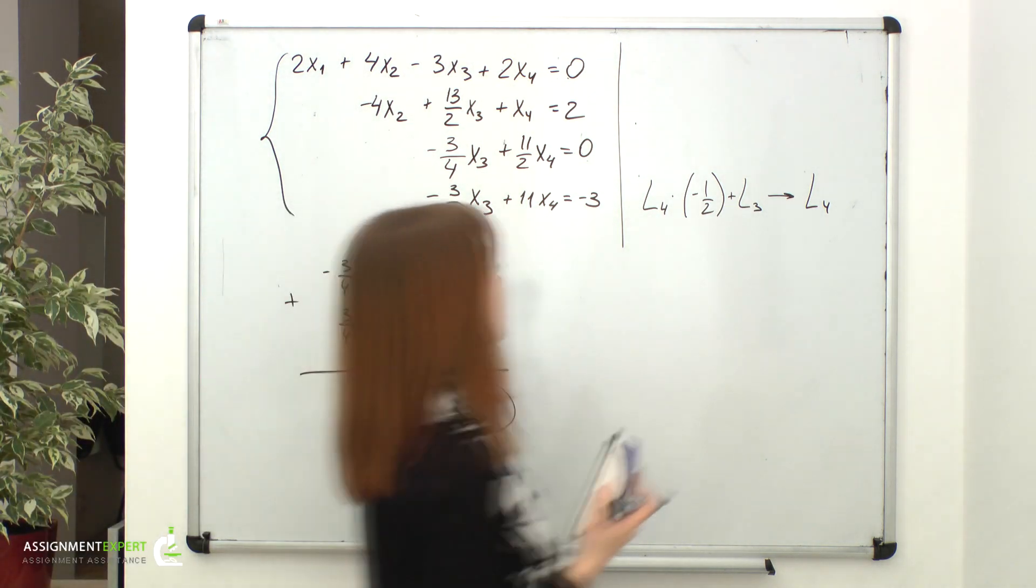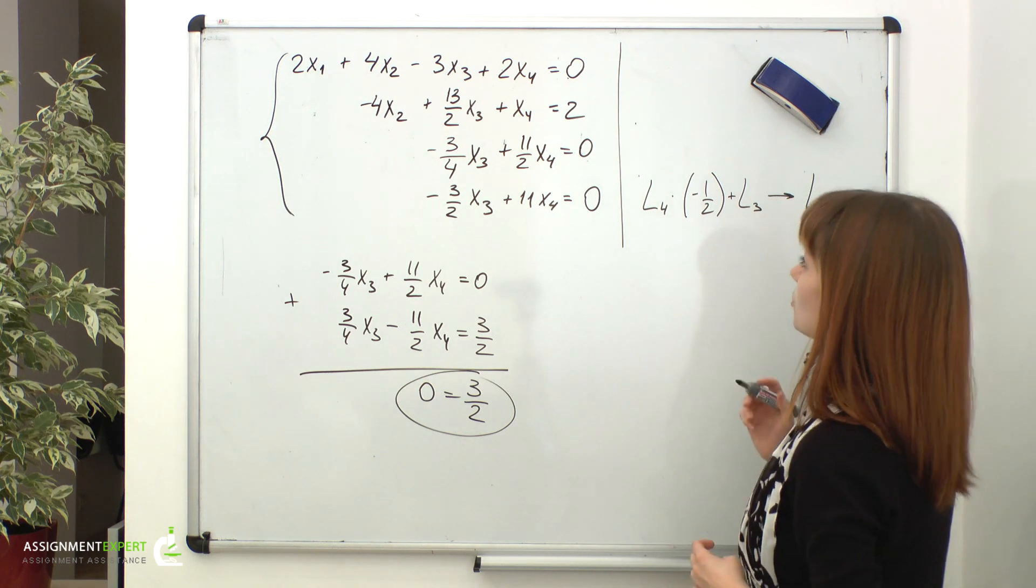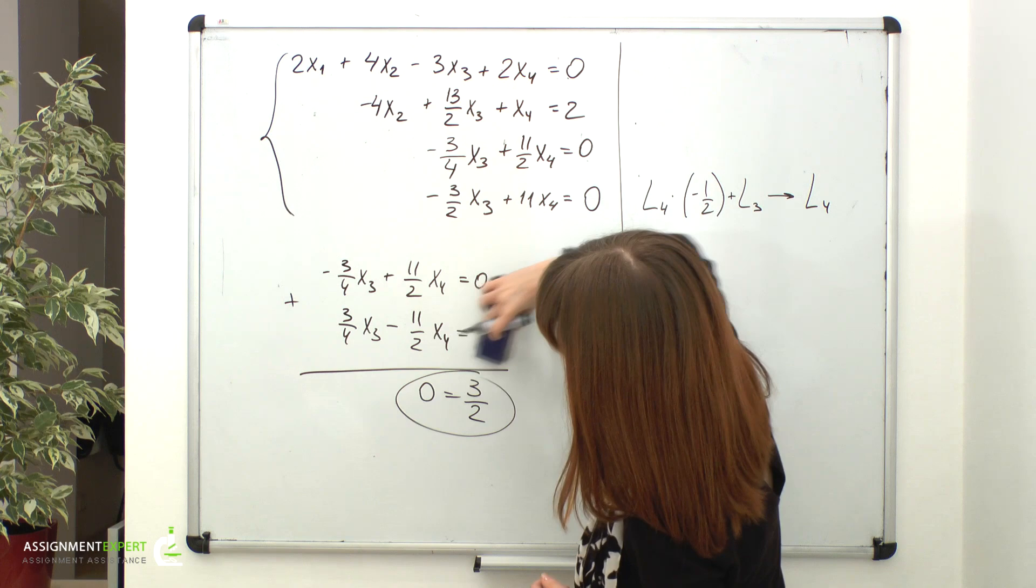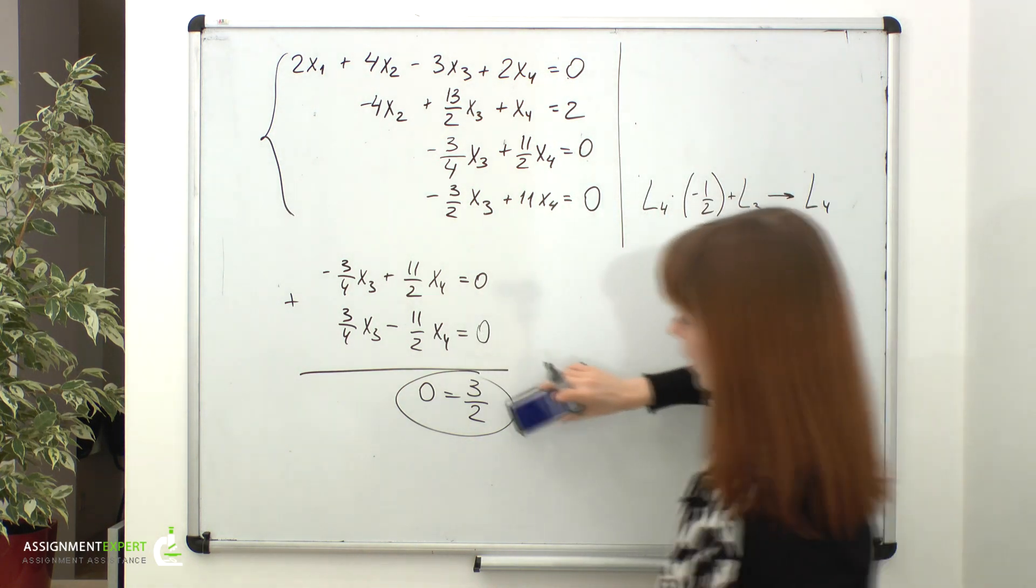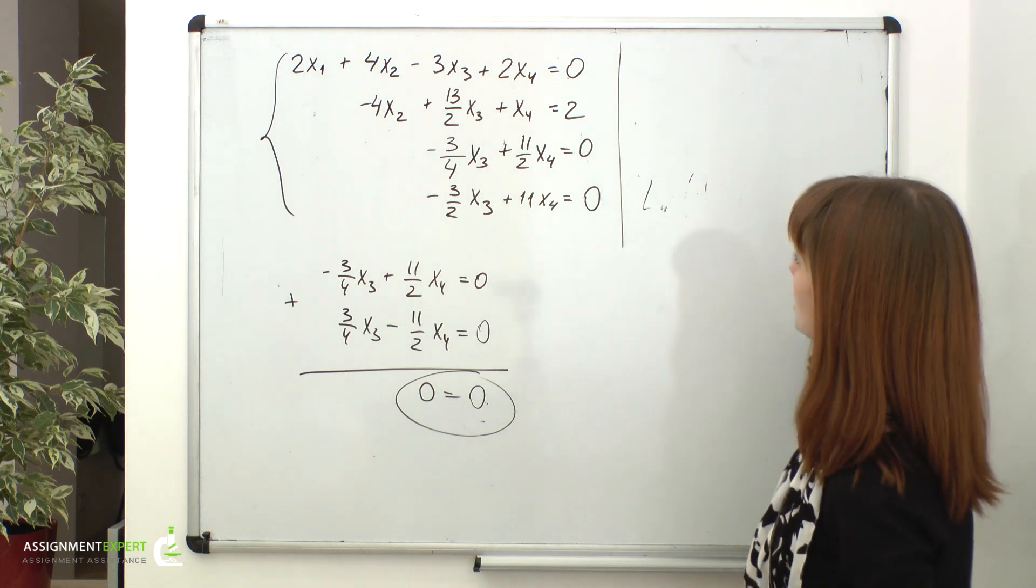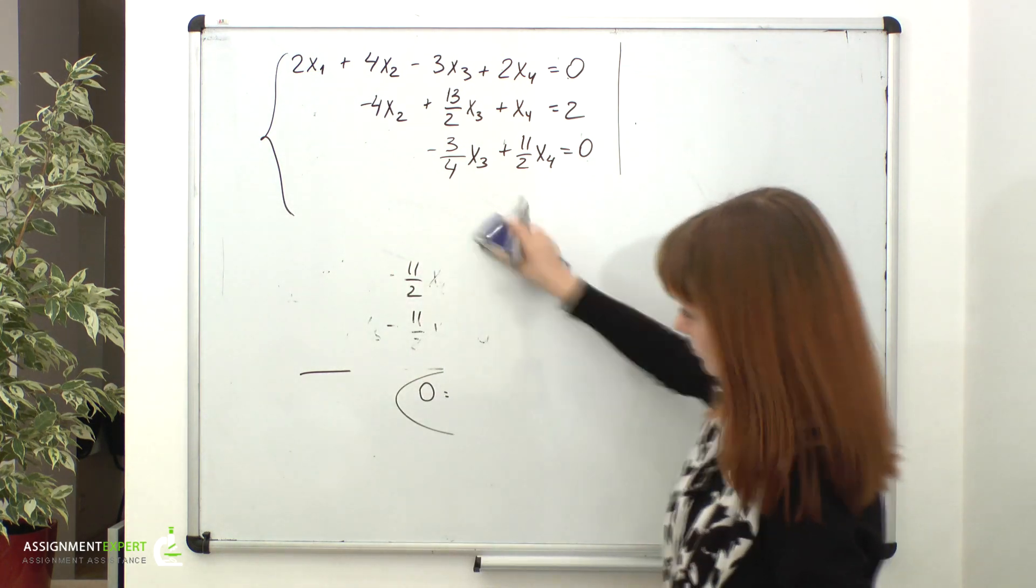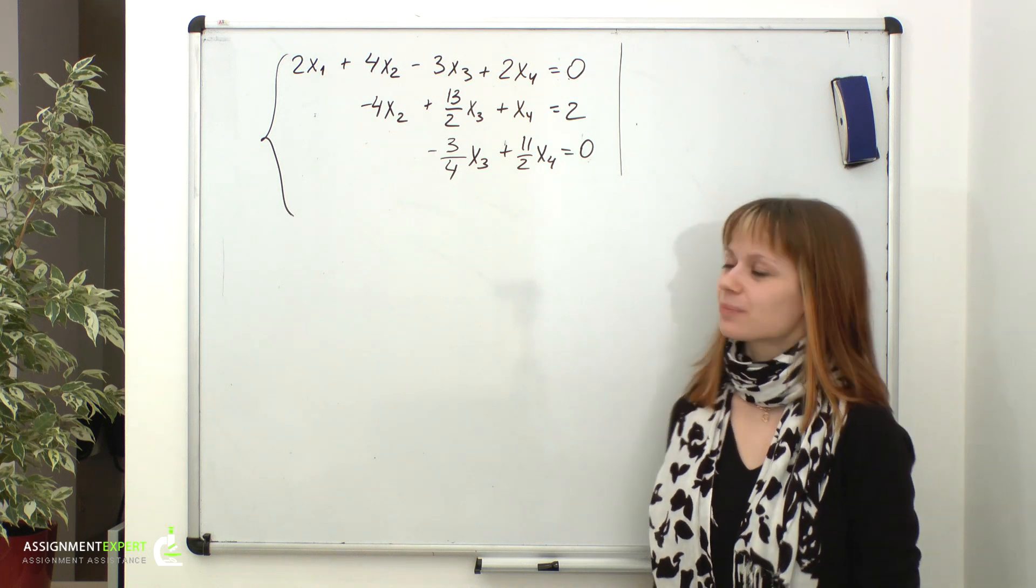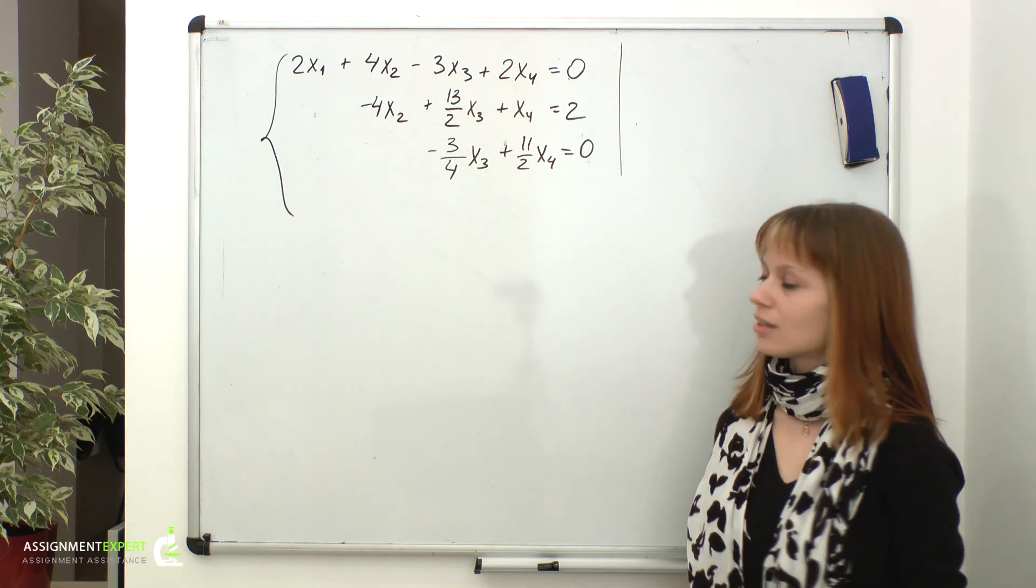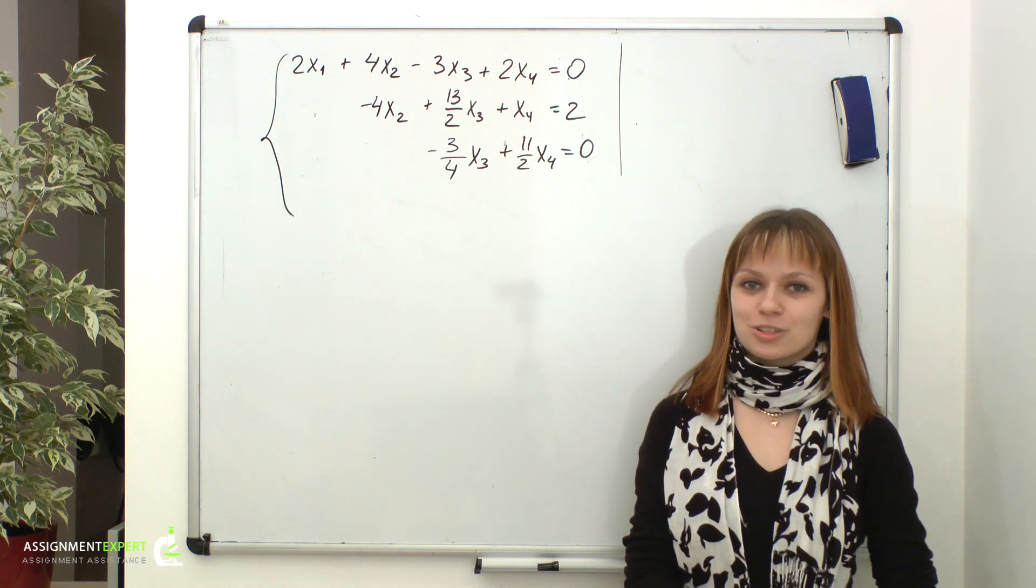Now consider another case. Suppose that our fourth equation would look like this. And we'd also multiply it by negative one half and add to the third equation according to Gaussian elimination method. And obtain an expression 0 equals 0. So, it basically means that our system degenerates into this. Take a look. We have four unknowns, but only have three equations. That is the case of an indefinite system. A system with more than one solution. We cannot uniquely define all the unknowns, but only can express some unknowns in terms of the other ones. I'll post a few examples on such cases for you. Meanwhile, enjoy!